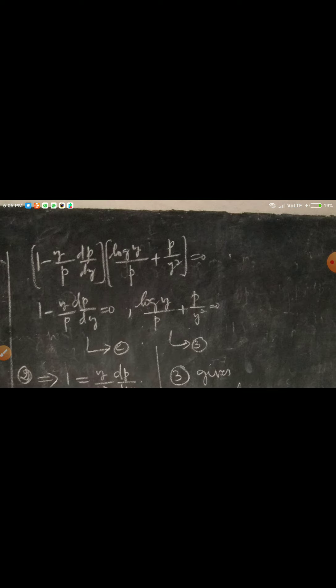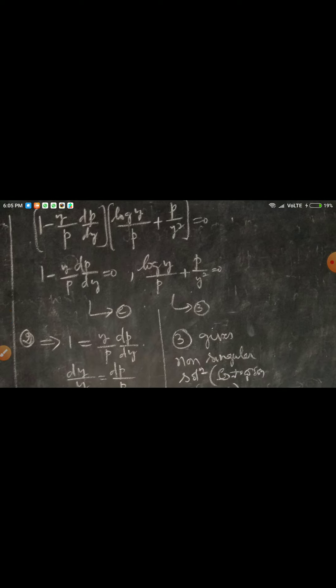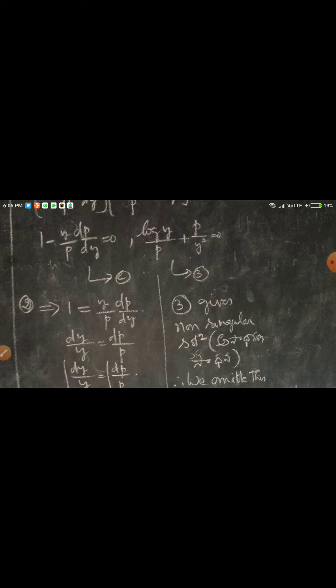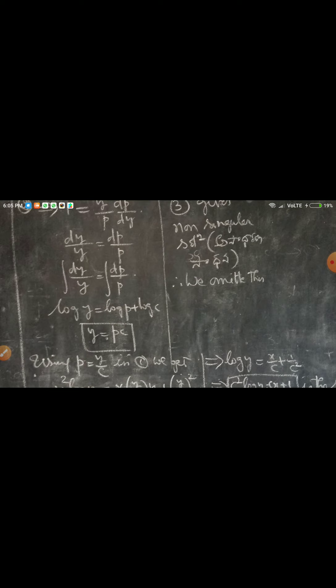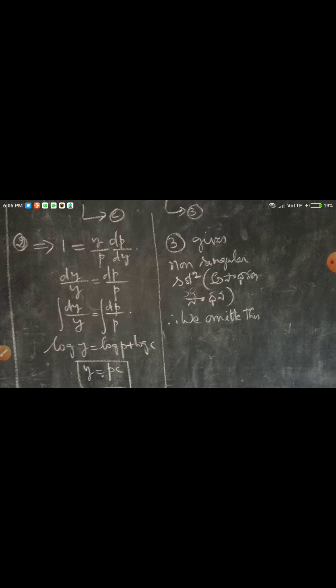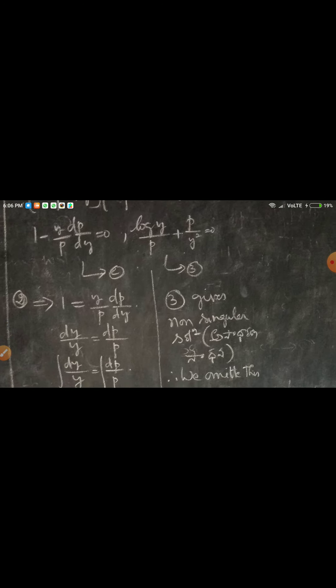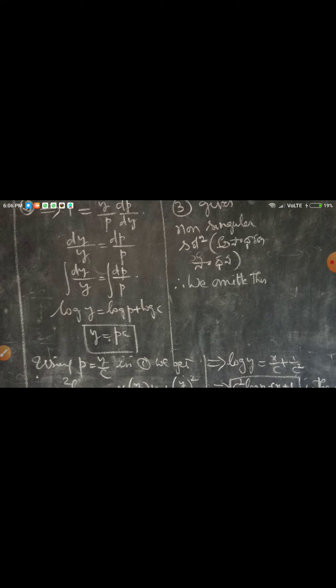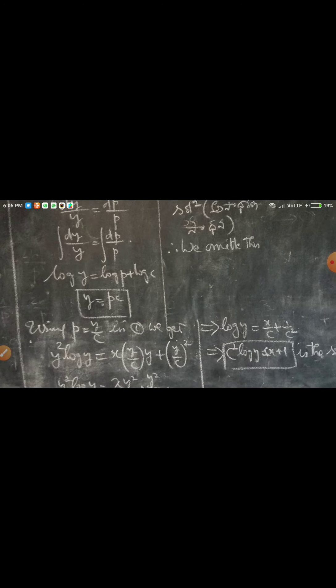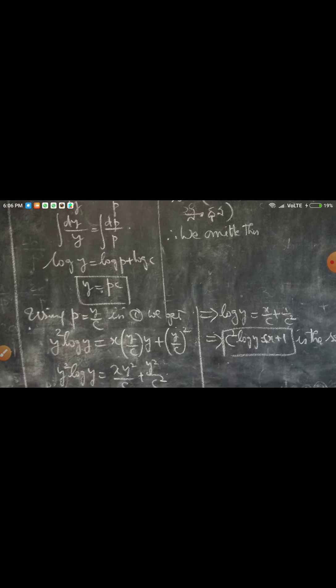From equation 2: dy/y = dp/p, so integrating: log y = log p + log C, therefore y = pC, giving p = y/C. Equation 3 gives a non-singular solution, which we omit. Substituting p = y/C into the original equation y²·log y = x·p·y + p²: y²·log y = x·(y/C)·y + (y/C)², so y²·log y = xy²/C + y²/C². Dividing by y²: log y = x/C + 1/C², or equivalently C²·log y = Cx + 1 is the solution.